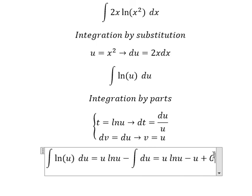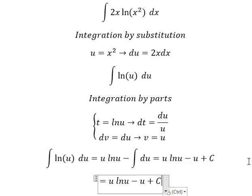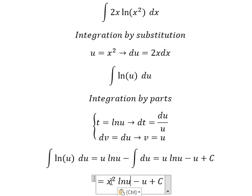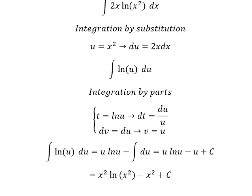Then we add the constant C. Substituting back u equals x squared, we get x squared ln(x squared) minus x squared plus C.